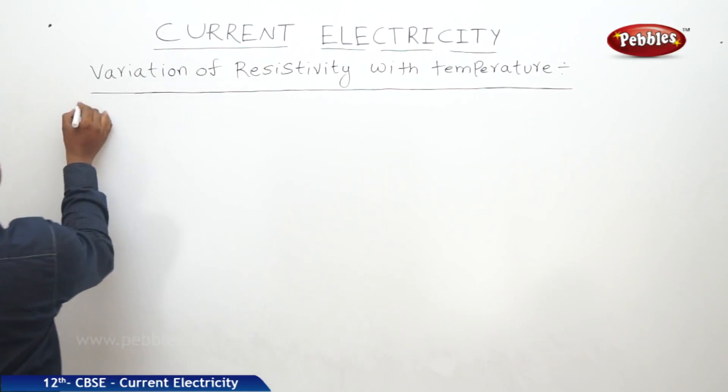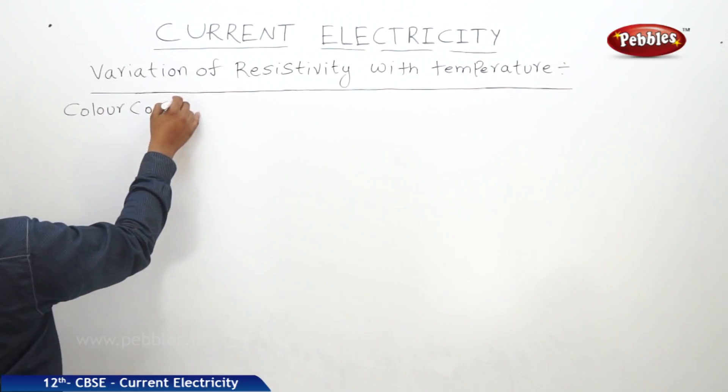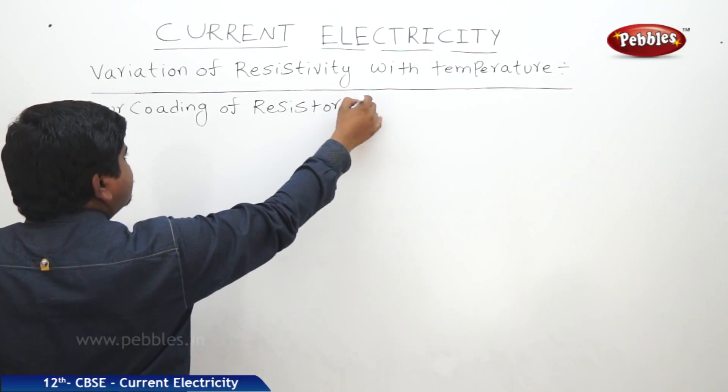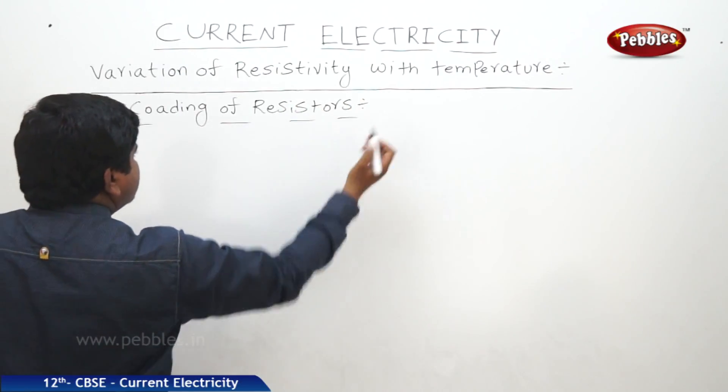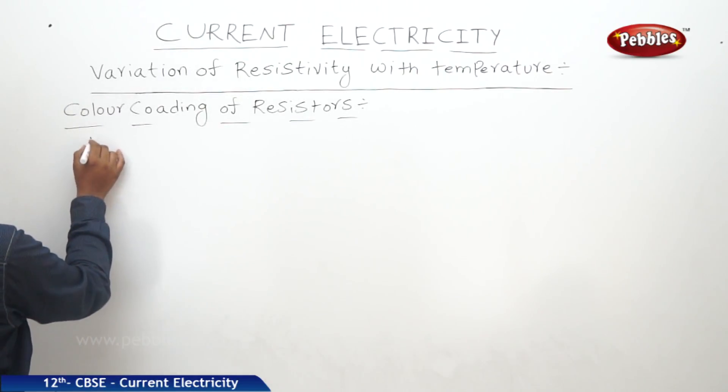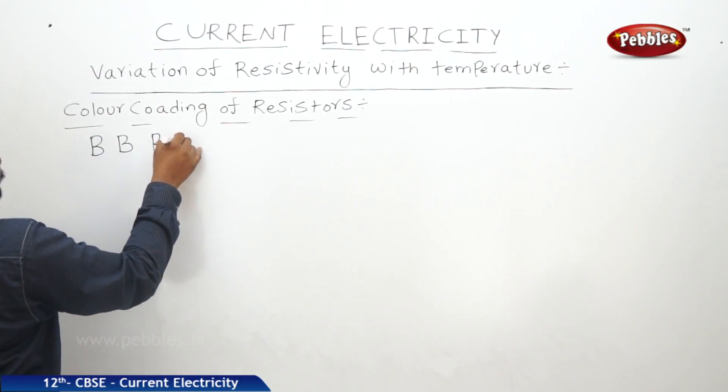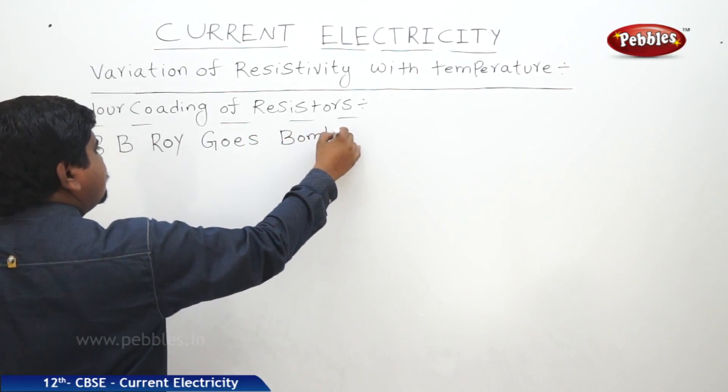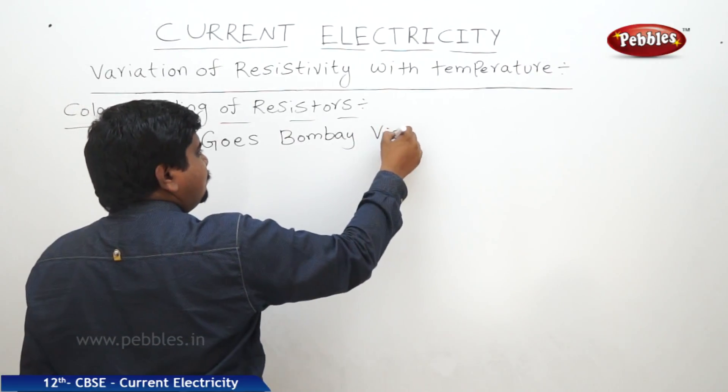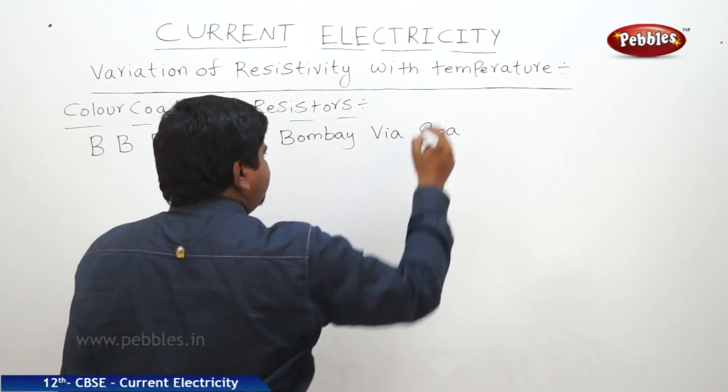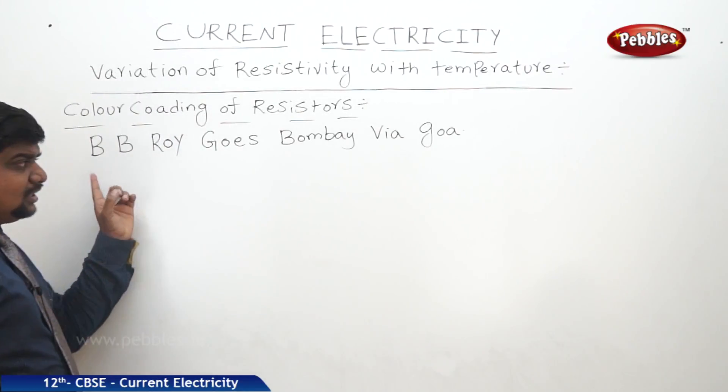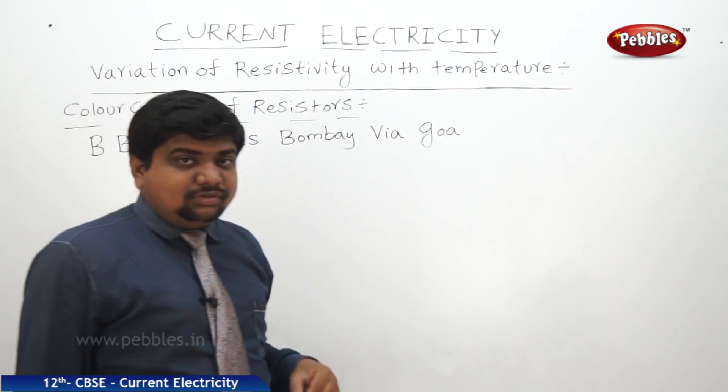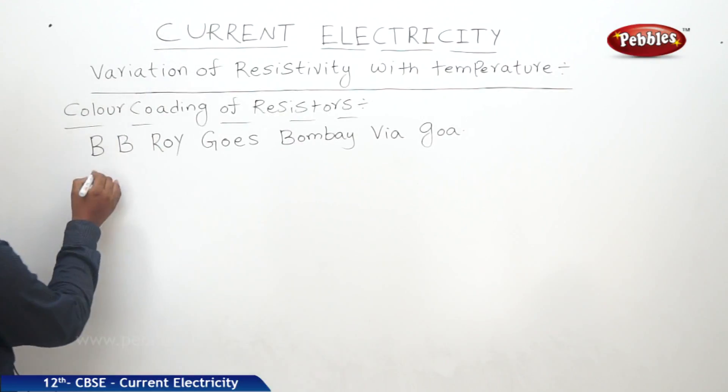Color coding of resistors: There is a statement—BB Roy Goes Bombay Via Goa. It may not be true, but this code is very important to find out the color coding of each color. What are these colors? What are the color codes? The first B is Black.